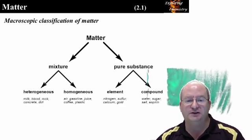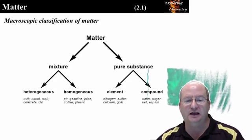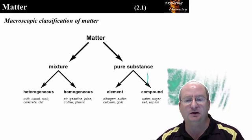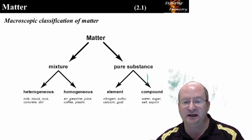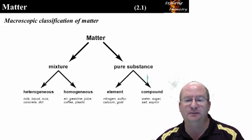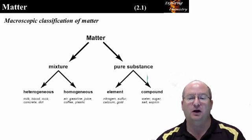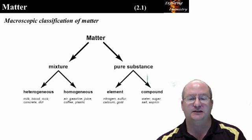Homogeneous mixtures are mixed at the molecular level. No matter how small a quantity you take, it will always contain chemical entities in the same proportion as the bulk. Air, gasoline, and coffee are some examples. Apple juice is a homogeneous mixture, but orange juice with pulp is a heterogeneous mixture.